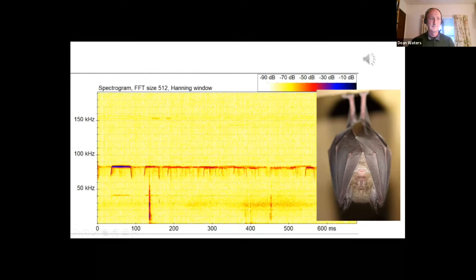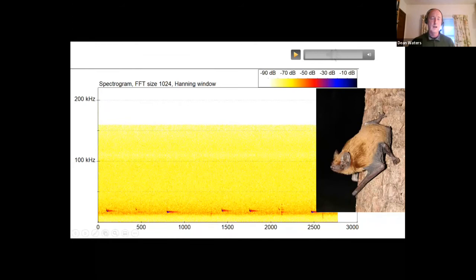This is a soprano pipistrelle call. We can tell that by the call shape and where the frequency ends up. It's zooming in on the prey and about to capture it. It gets up to about 200 calls per second at the very end there because it's zooming on the prey. It needs to know exactly what the prey is doing at the last minute. These are horseshoe bats with the long duration calls as I mentioned—very long duration because they capture the movements of the insect's wings.